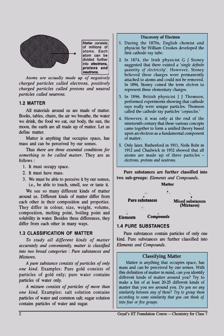We see so many different kinds of matter around us. Different kinds of matter differ from each other in their composition and properties. They differ in color, size, weight, volume, composition, melting point, boiling point, solubility in water. Besides these differences, they differ from each other in many ways.